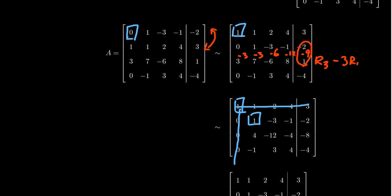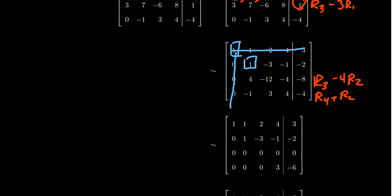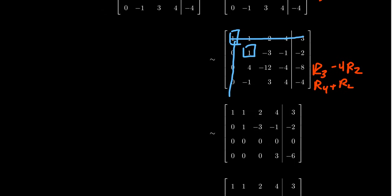To get rid of the 4 below the pivot in row 3, I take row 3 and subtract 4 times row 2. To get rid of the negative 1 in row 4, I just add row 2 to row 4. I'll do these two elementary row operations simultaneously — doing simultaneous row replacements is acceptable. Writing the superscripts really helps you avoid common arithmetic mistakes here.